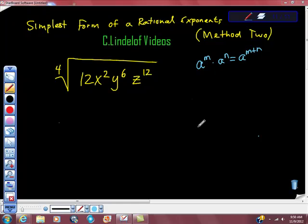We're asked to find the simplest form of a rational exponent, and this is the second method. The first method is to use this radical and turn it into an exponential value of one-fourth. But there's another way to do this, and I want to show it to you really quickly.